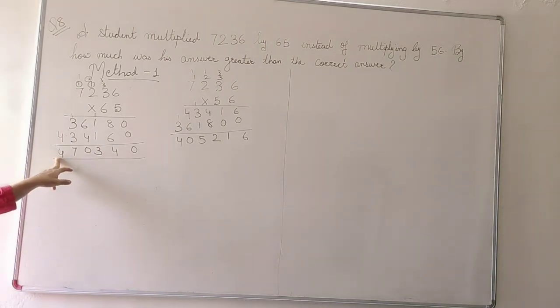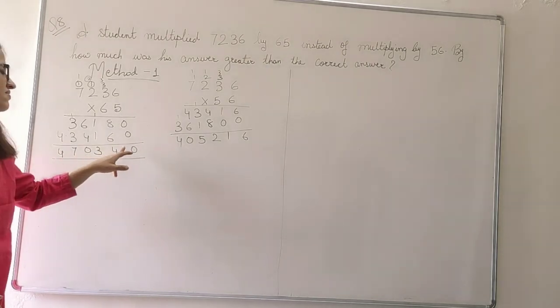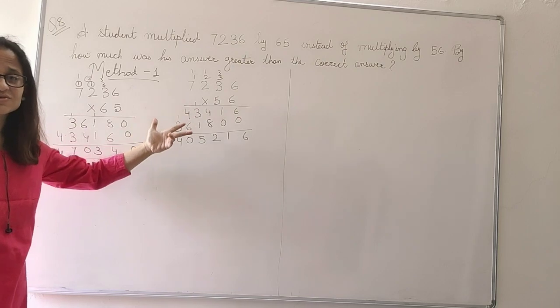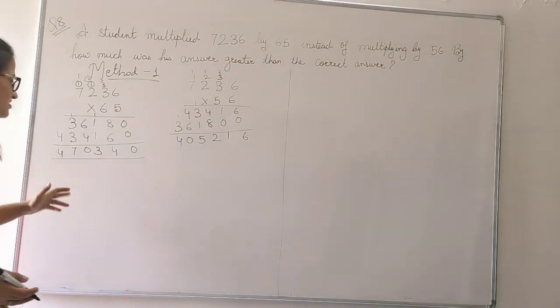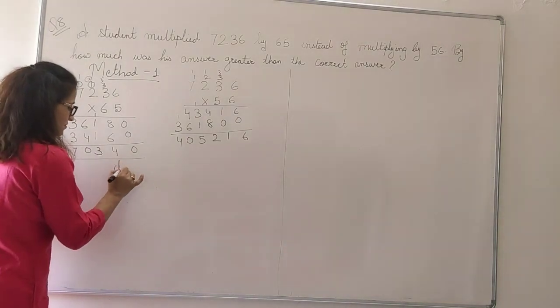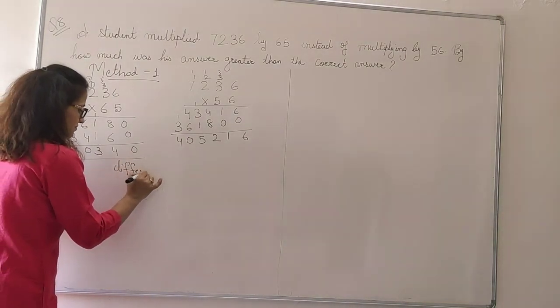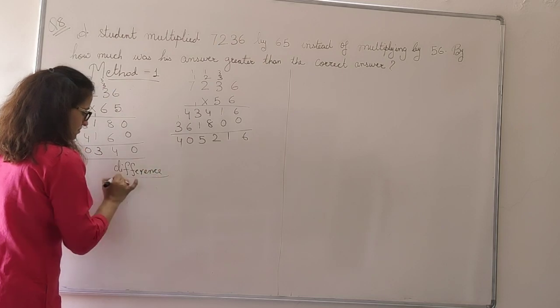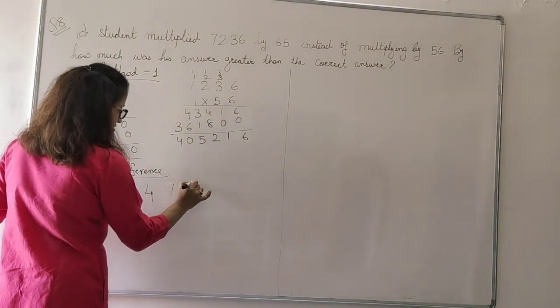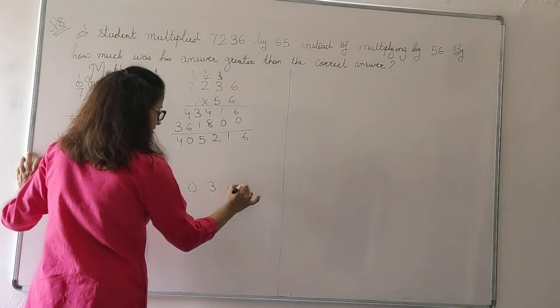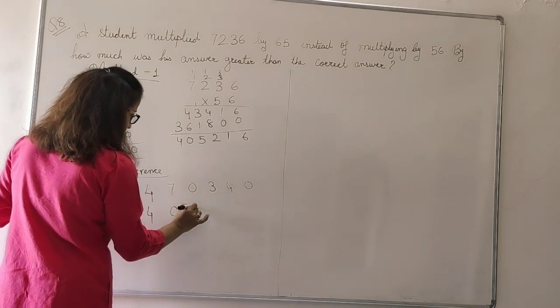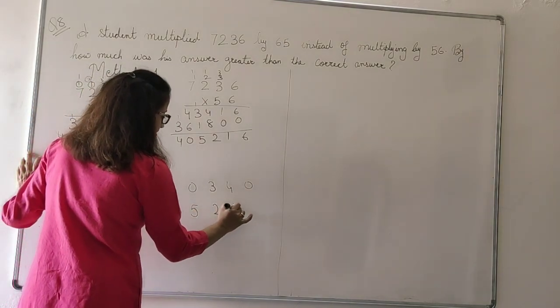Now here 4, 70, 340 is greater and this is smaller. So how much was it greater? So what we will do for the third step? We will find the difference between the answers.